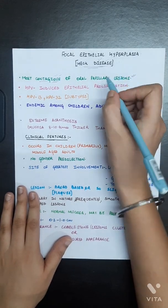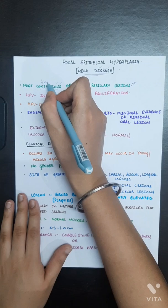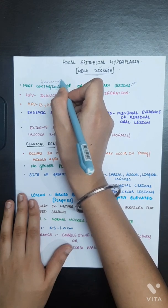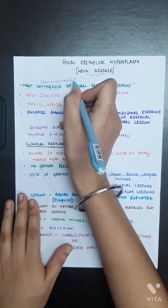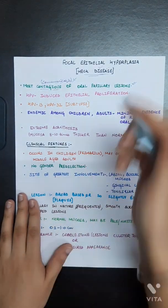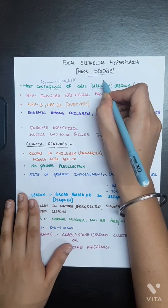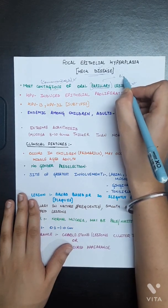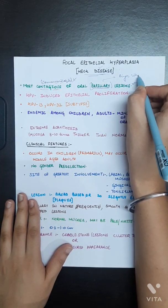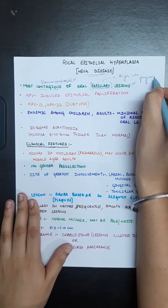Basically, this is the most communicable or spreadable kind of disease. Oral papillary, papillary means a lesion which is having finger-like projections.